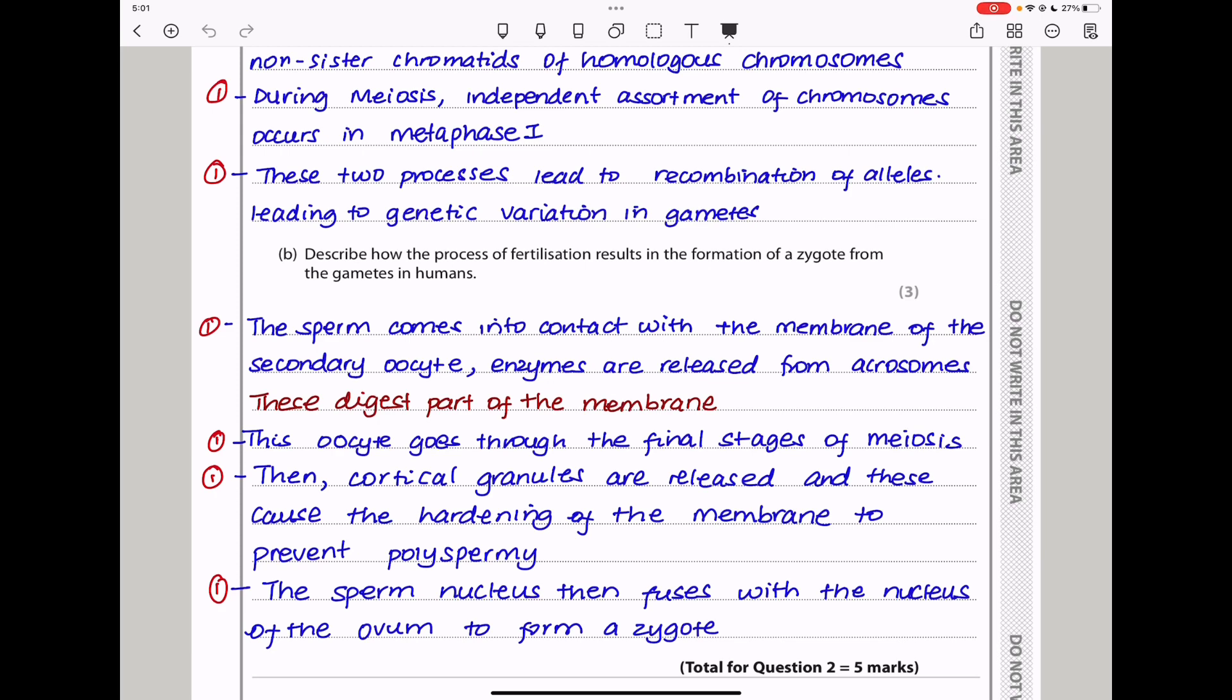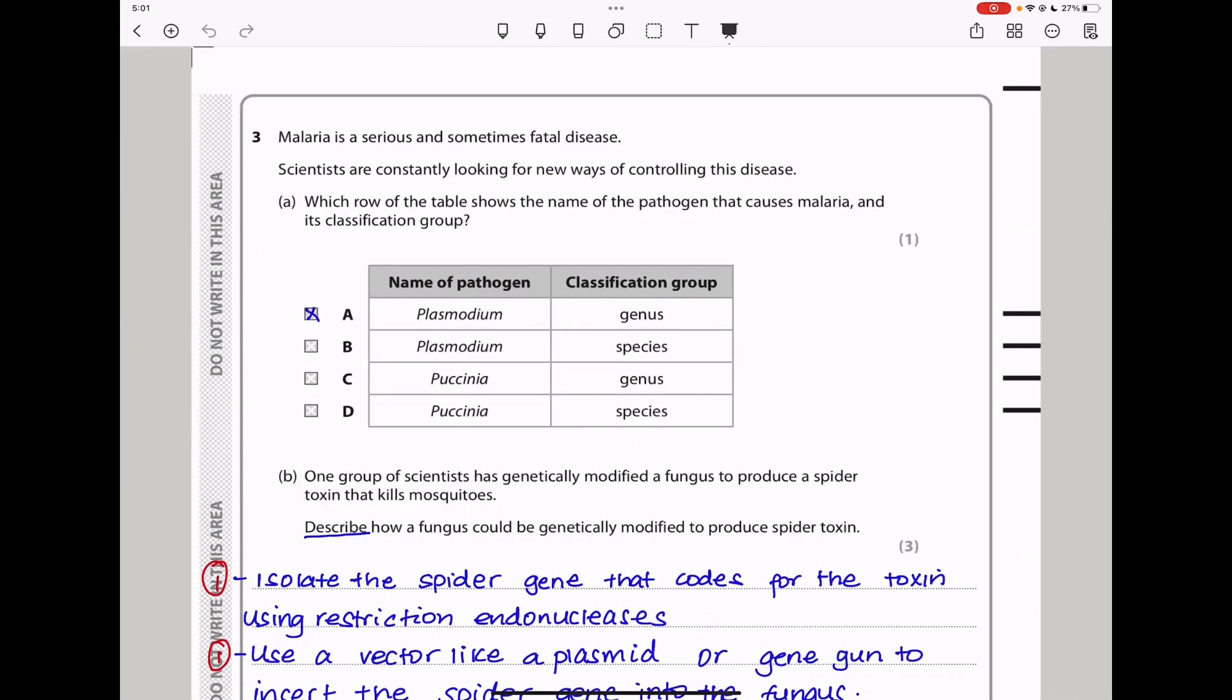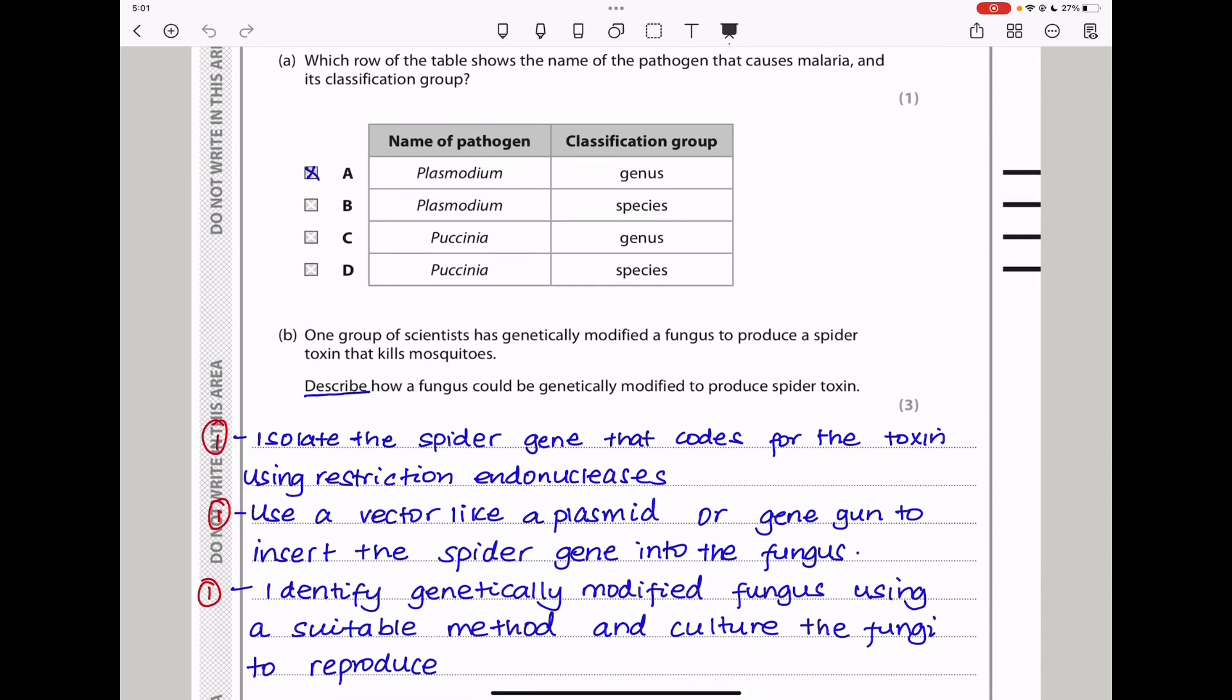Let's continue to question 3. Malaria is a serious and sometimes fatal disease. Scientists are constantly looking for new ways of controlling this disease. Which row of the table shows the name of the pathogen that causes malaria and its classification group? We know malaria is caused by Plasmodium, and the group is genus, because Plasmodium is the genus name and not the species name. So the answer here should be A.